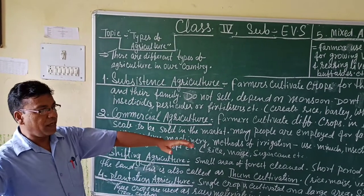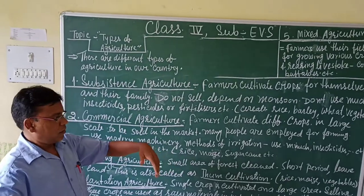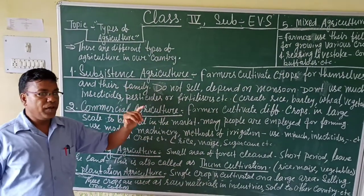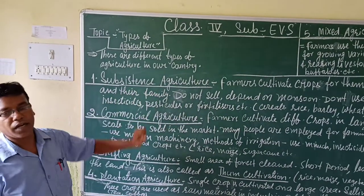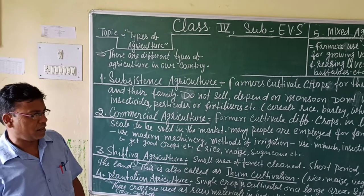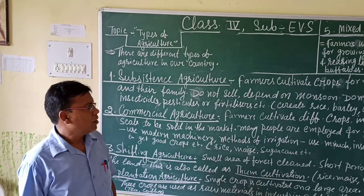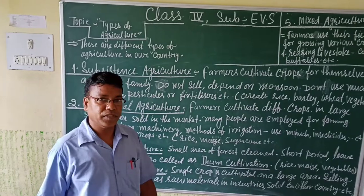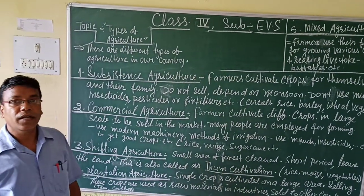In different areas, different types of agriculture are being done. We will go step by step. The first one is subsistence agriculture. In this type of agriculture, farmers cultivate crops for themselves and for their family.